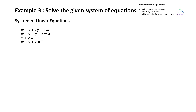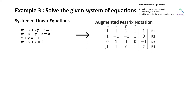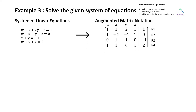Next we will be solving a second system of linear equations. The first step is to write the system of linear equations in augmented matrix notation. We will be working column by column and using the pivoting method to transform this matrix into row echelon form.